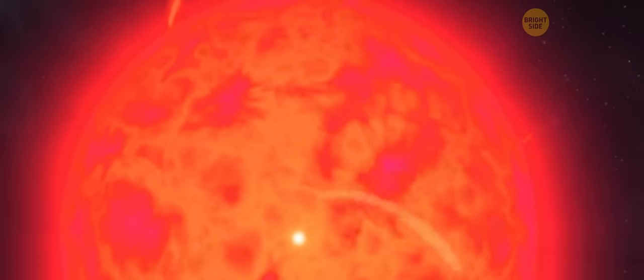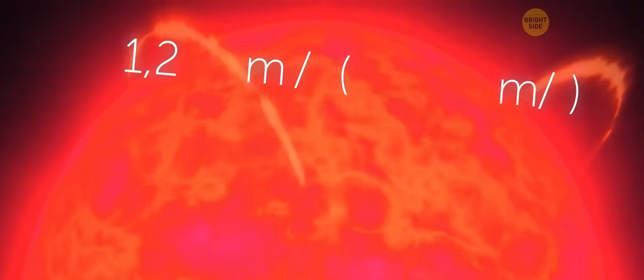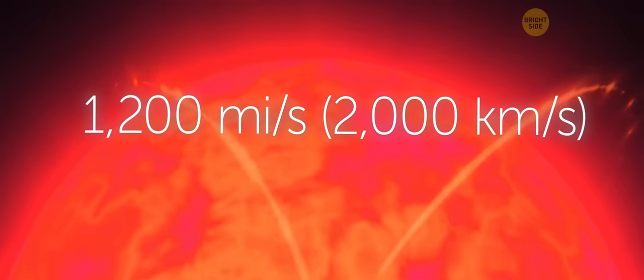Arcturus is now so close that you can even see storms of hot plasma on its surface. There are periodic outbursts and mass ejections. Huge amounts of matter are ejected from the surface of the star at speeds of up to 1,200 miles per second.